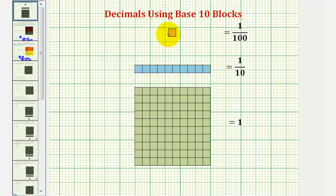And the one by one grid, often called a bit, equals one-hundredth. Notice ten bits equals one long, because ten one-hundredths equals one-tenth.